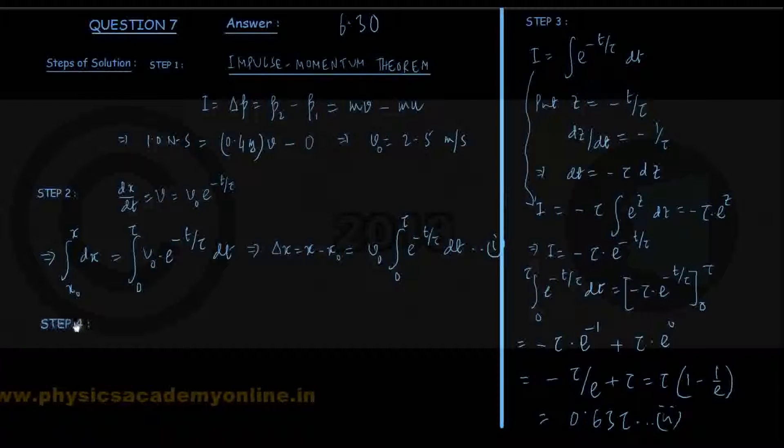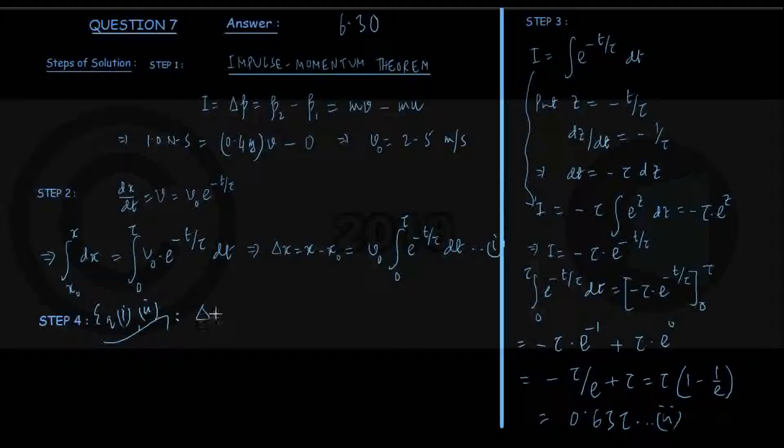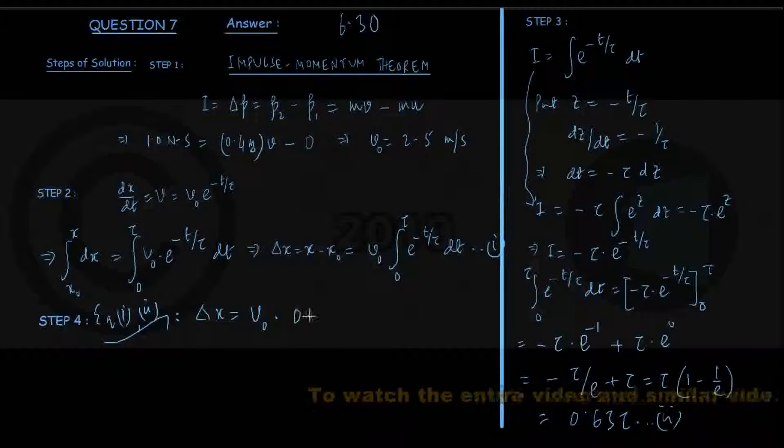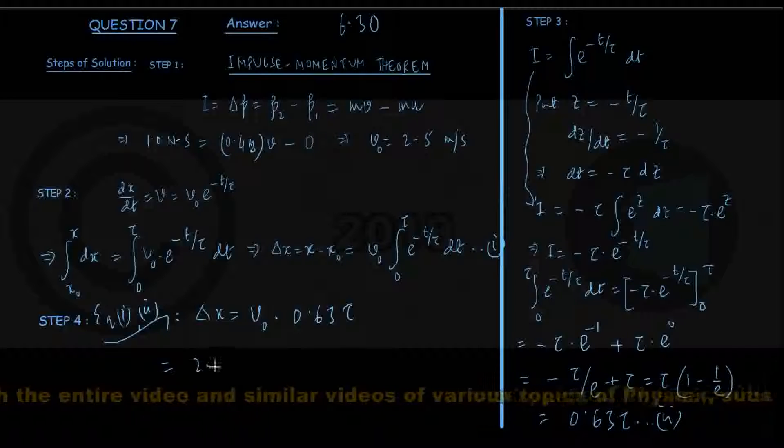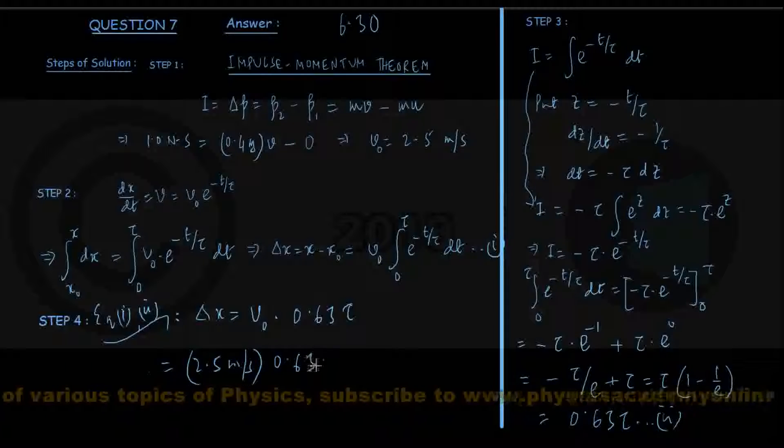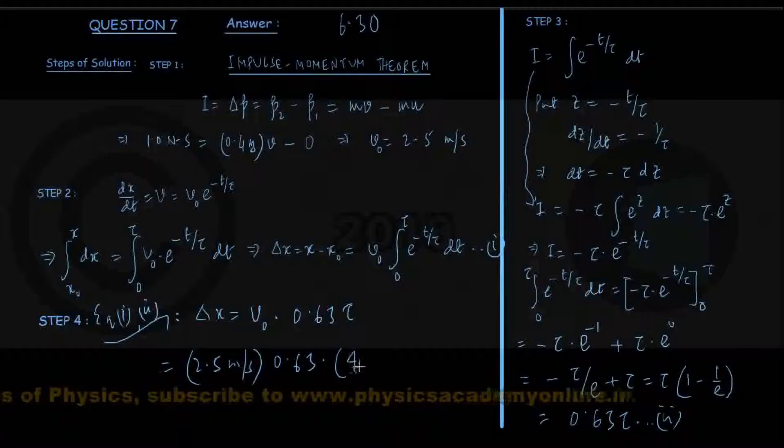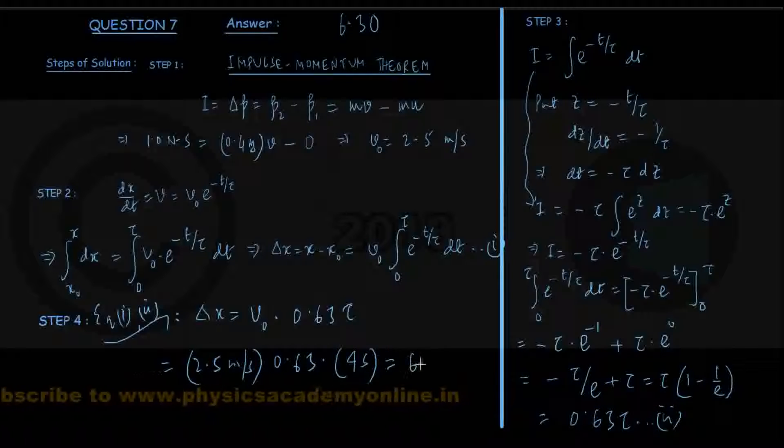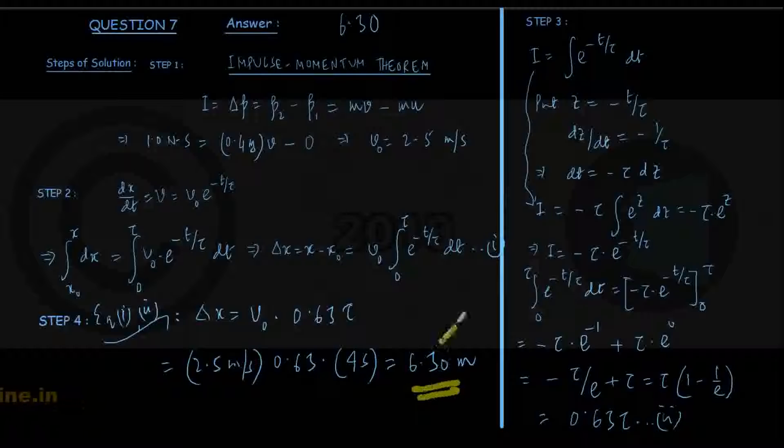Going for the next step, step number 4, where we combine equations 1 and 2. We are getting the displacement delta x in time tau equals v0 times 0.63 tau. Putting values now: v0 already found to be 2.5 meter per second times 0.63 times the value of tau that was given to be 4 seconds. We solve and show this coming out to be 6.30 meters, and that is the solution for this problem.